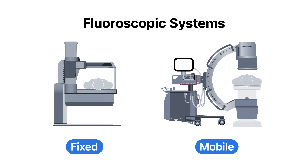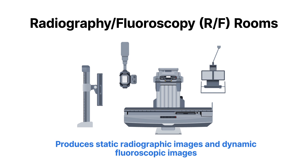Fluoroscopic systems can also be categorized by the settings in which they are used. These settings are divided into two categories: fixed and mobile. A fixed fluoroscopic system is usually found in radiology departments or imaging centers and can produce both static radiographic images and dynamic fluoroscopic images. For this reason, these rooms are called radiography fluoroscopy rooms, or RF rooms.